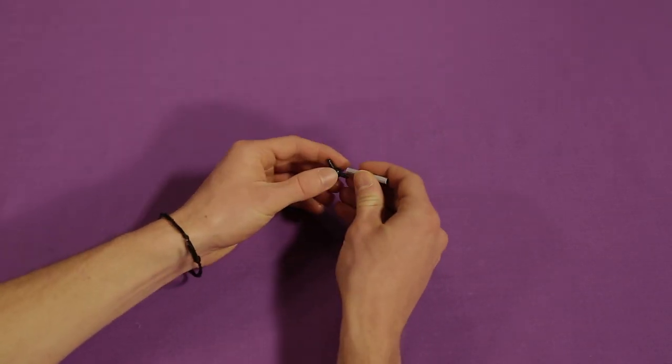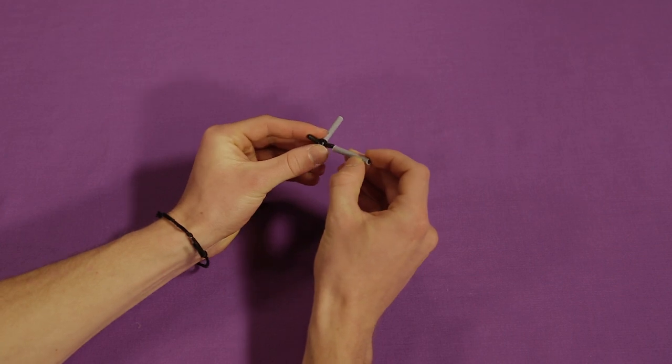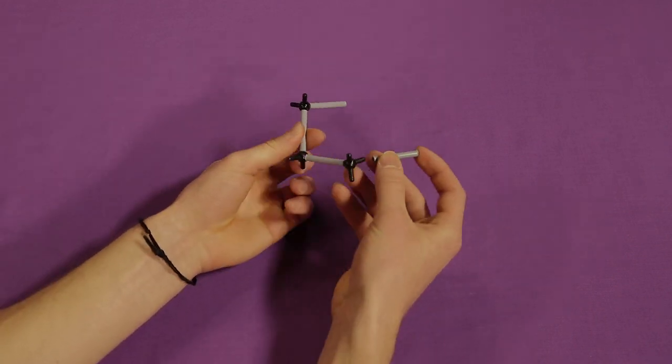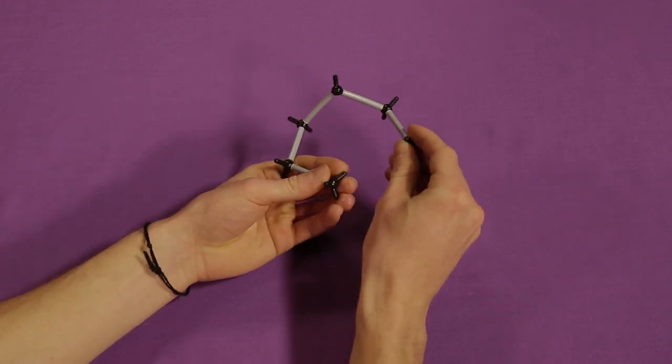Start by connecting the sp3 hybridized carbon atoms in a ring. This ring will have a three-dimensional structure and will not be able to lay flat on the table.